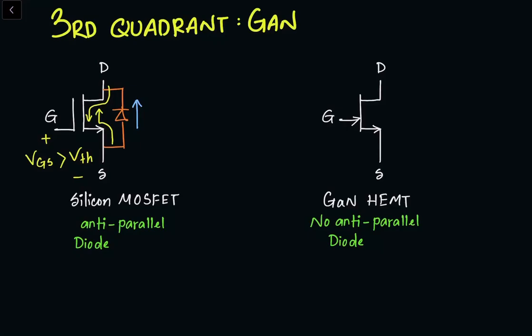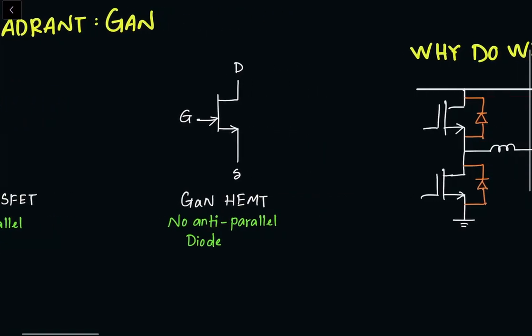For the gallium nitride HEMT, as we'll see later in the structure, there is no built-in PN junction or intrinsic body diode. So how does third quadrant operation happen? By third quadrant operation, we mean the third quadrant of IV characteristics — when both the drain current as well as the drain-to-source voltage are negative, we call it third quadrant operation or reverse current operation.